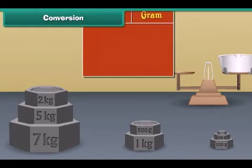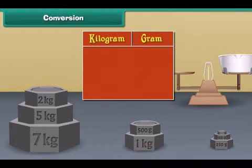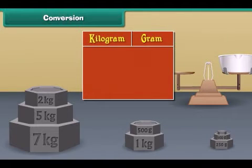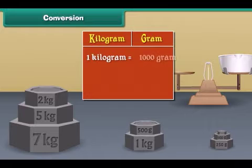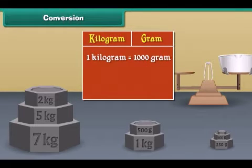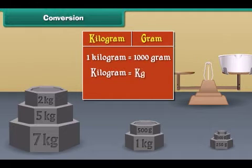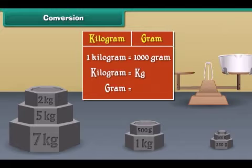The words kilogram and gram are used to express weight. One kilogram is equal to 1000 grams. Kilogram is also represented as kg, and gram is also represented as g.